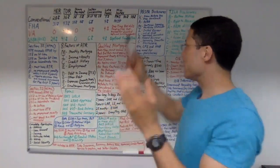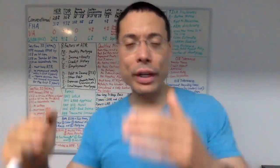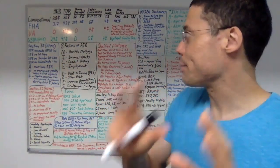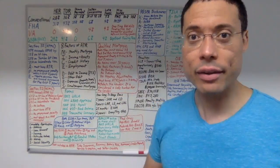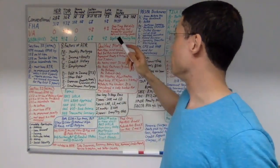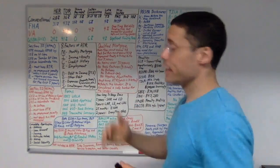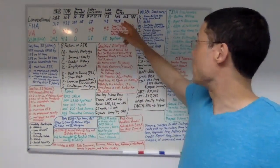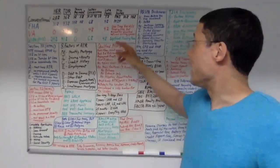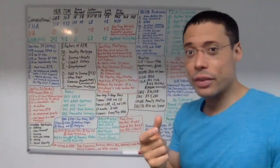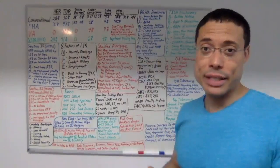A miscellaneous note about conventional loans: they have PMI, private mortgage insurance. PMI applies only when the down payment is less than 20%, or when the LTV is 80% or more. The PMI can be requested to be removed when equity reaches 20% or LTV reaches 80%, and it must automatically come off when equity reaches 22%, or the LTV reaches 78%.